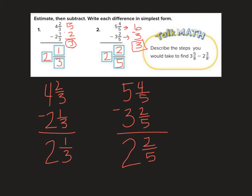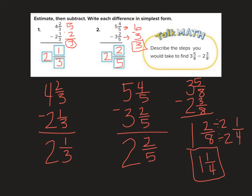Okay, I'm looking at the talk math here. It says, how would you do 3 and 5 eighths minus 2 and 3 eighths? Well, first we'd subtract the fractions. 5 minus 3 is 2 eighths. Then I'd subtract my whole numbers. 3 minus 2 is 1. Then I would simplify and say my answer is 1 and 1 fourth. So there are the steps I would take.